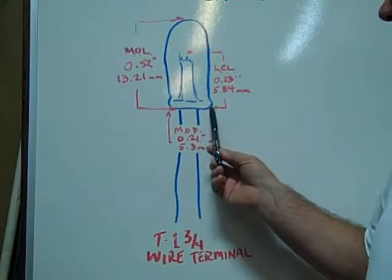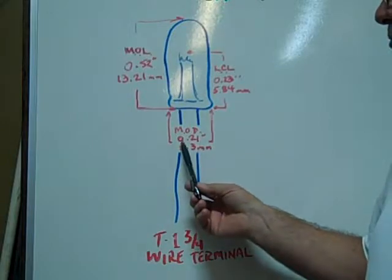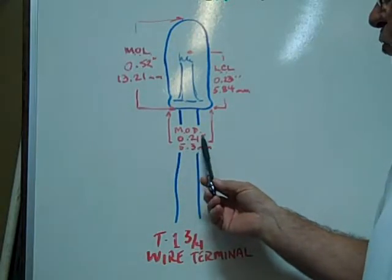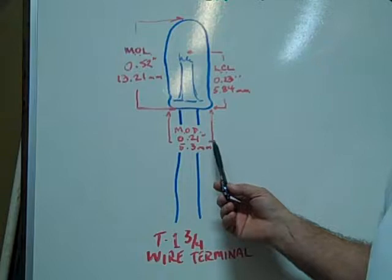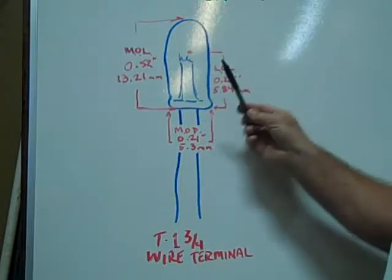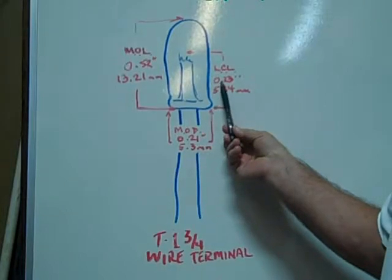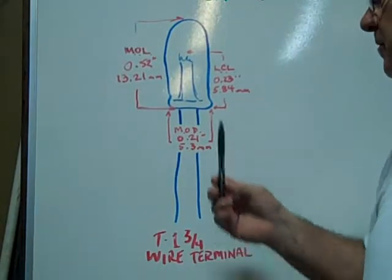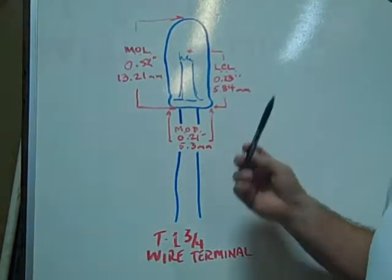The maximum outer diameter of the glass envelope is 0.21 inches, 5.3 millimeters. The light center length is 0.23 inches, 5.84 millimeters.